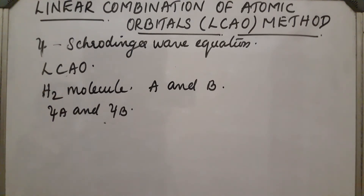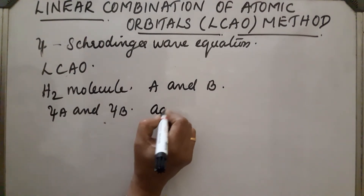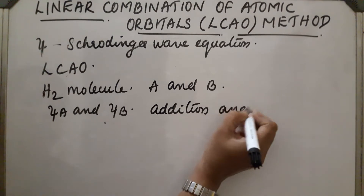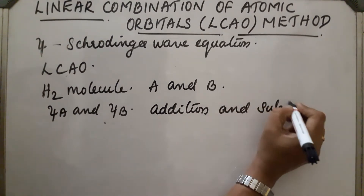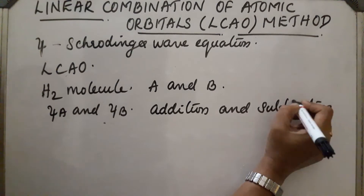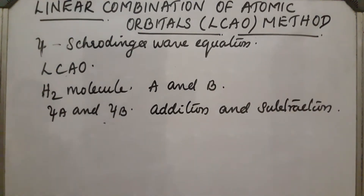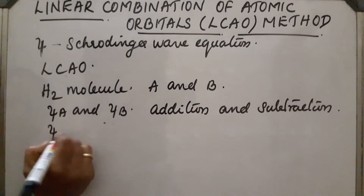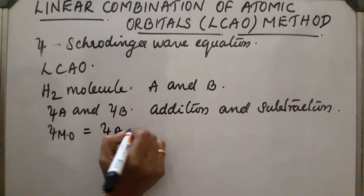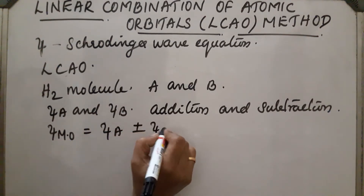Mathematically, during their linear combination, addition and subtraction of atomic orbitals take place. The molecular orbital can be represented as: ψ(MO) = ψA ± ψB. The wave function for the bonding molecular orbital is equal to ψA plus ψB.